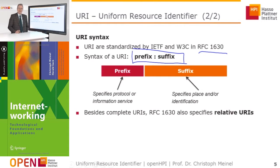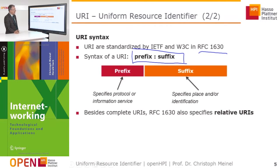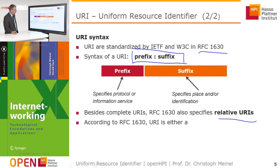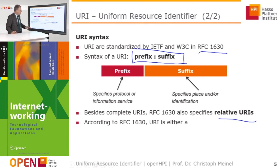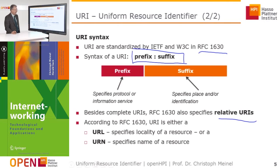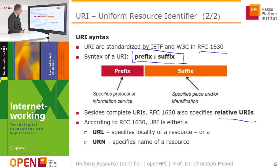In RFC 1630, not only complete URIs are described, but also so-called relative URIs. According to this RFC, a URI is either a URL, which specifies the location of the resource, or it is specified by a URN, which gives the name of the resource.